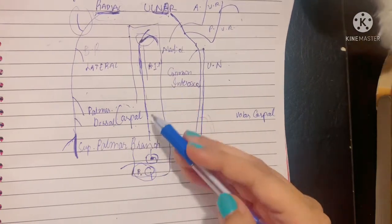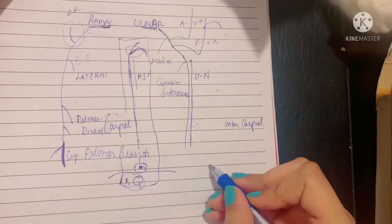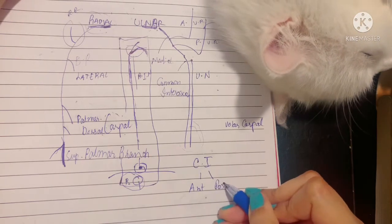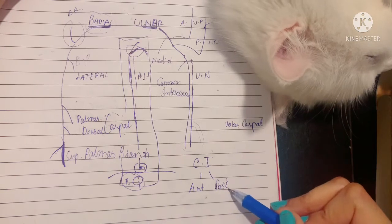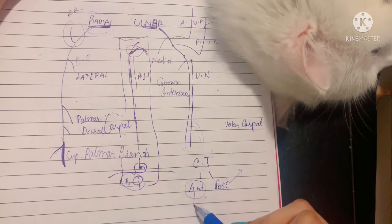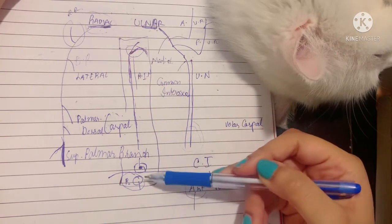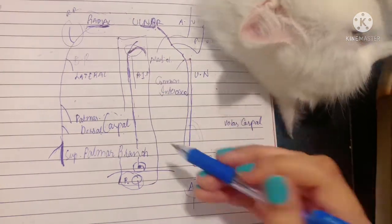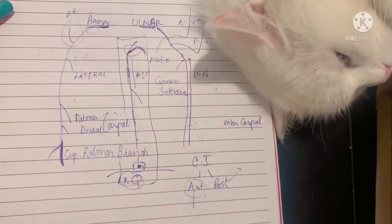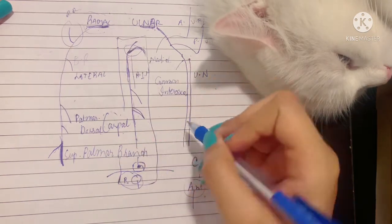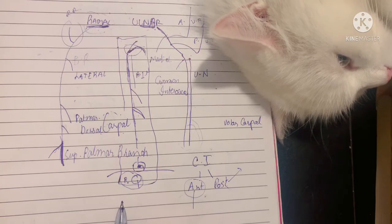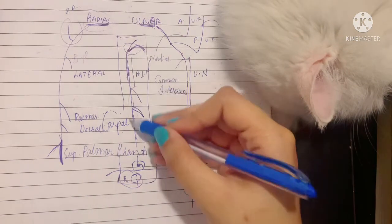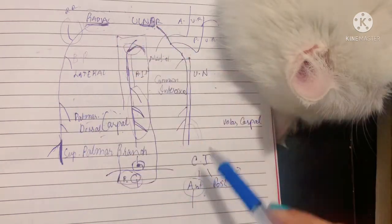The anterior interosseous artery runs vertically along the interosseous membrane and, at the upper border of the pronator quadratus, pierces the interosseous membrane in the lower part to enter the dorsum of the hand. Its branches include: nutrient arteries to the ulna and radius; muscular branches to the deep muscles of the forearm — namely the flexor digitorum profundus, flexor pollicis longus, and pronator quadratus; and the median artery, which accompanies the median nerve.